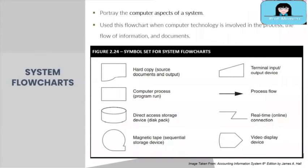Next we have system flowcharts. System flowcharts portray the computer aspects of a system. You use this flowchart when computer technology is involved in the process. The flow of information, as well as the documents, are shown using specific symbols commonly used for system flowcharts — familiarize yourself with these symbols.